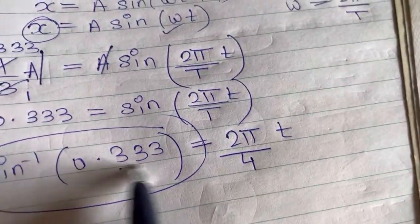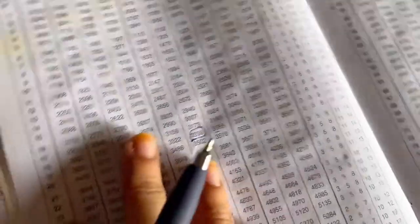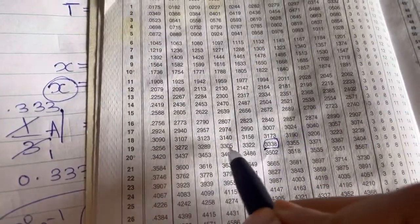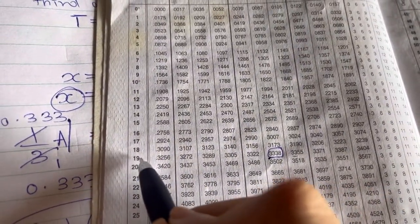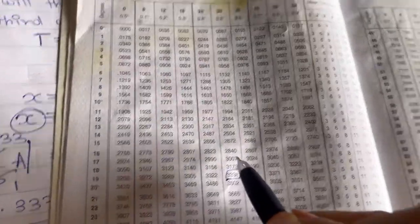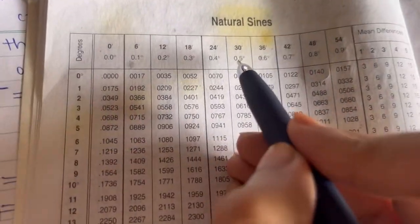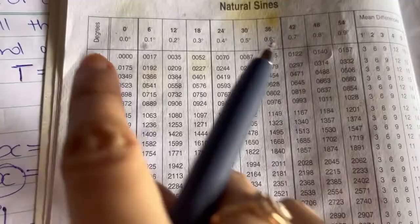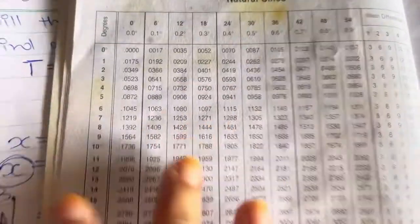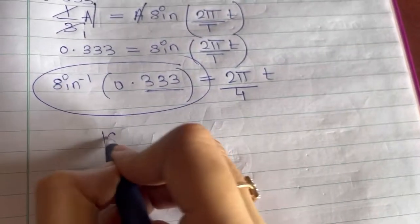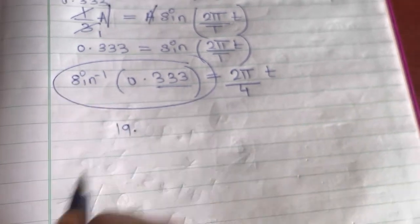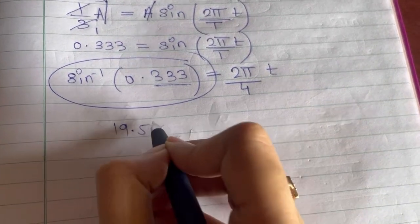So we will check in which degree does it come. If you check it over here, it comes for 19 degree. And when you check in this column, it is 0.5 degree. That is this 19.5 degree. Here the value will be 19.5 degree.